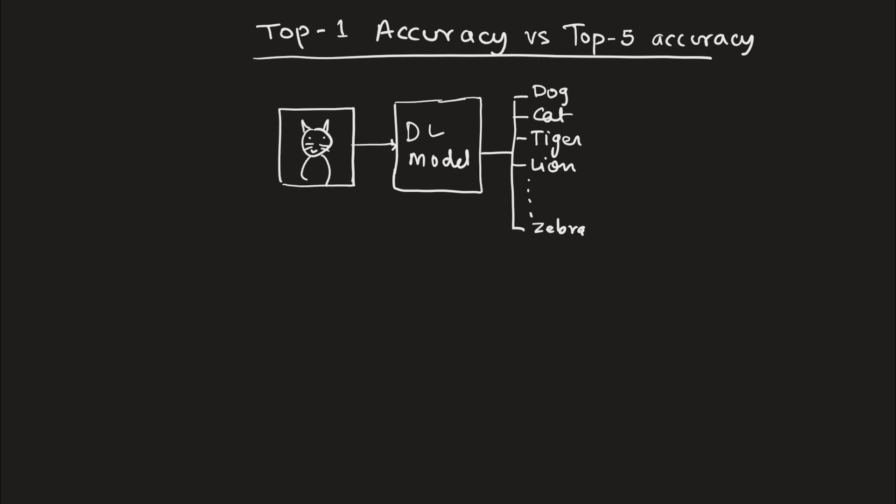So for dog it might say 0.2, for cat it might say 0.4, tiger might be 0.1 and so on. So if you can notice the highest will be cat, and if the highest is cat then we conclude that this image is of a cat.